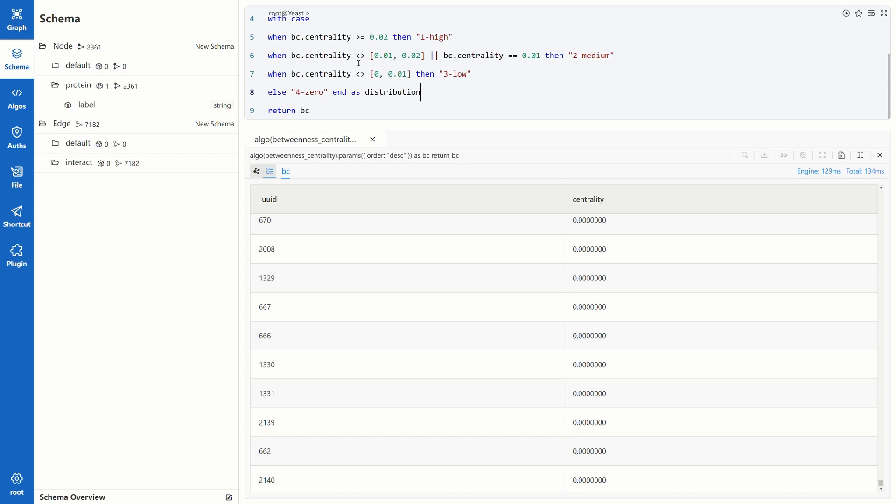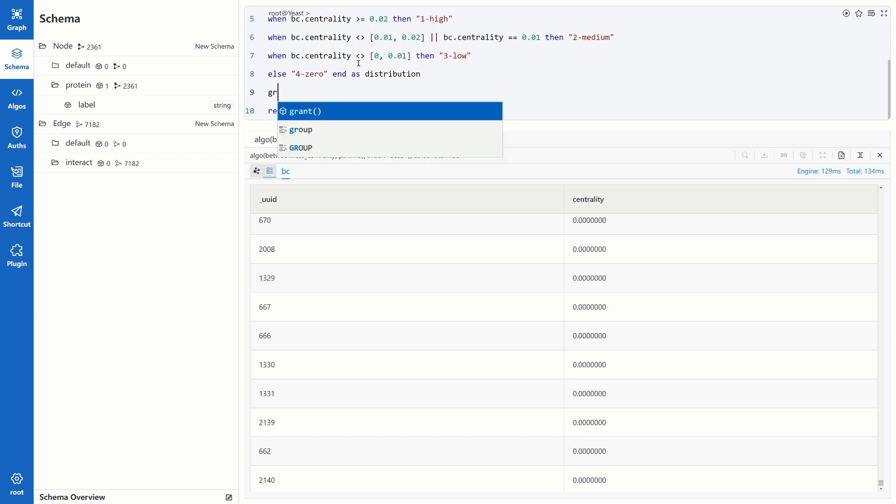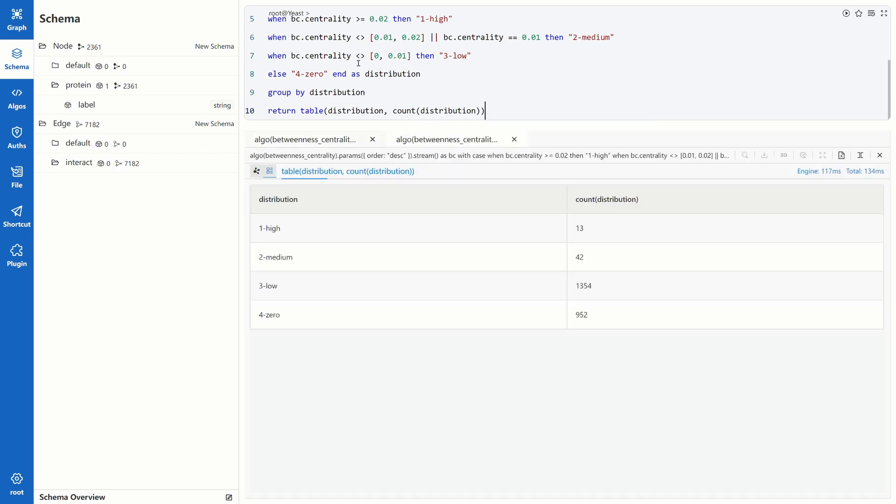One more thing before we return the distribution. Group the data by distribution tag we just assigned to each results. So results with the same distribution tags will be put together. In the return clause, we use the table function to organize the results. First column is the distribution tags and second column is the number of results of each distribution tag. Let's see the results.